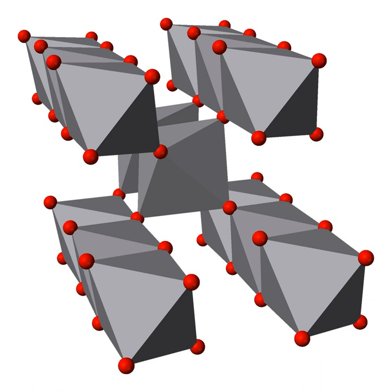At temperatures below Tc equals 340 K, VO2 has a monoclinic crystal structure. Above Tc, the structure is tetragonal, like rutile titanium-4 oxide.